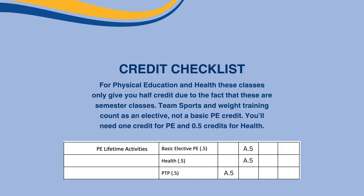For Physical Education and Health, these classes only give you half a credit due to the fact that these are semester classes. Team Sports and Weight Training count as an elective, not a basic PE credit. You'll need one credit for PE and half a credit for Health.